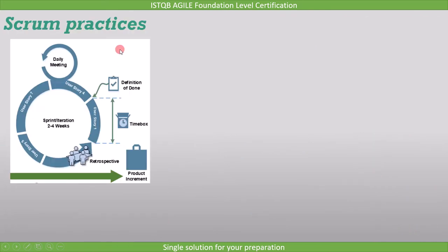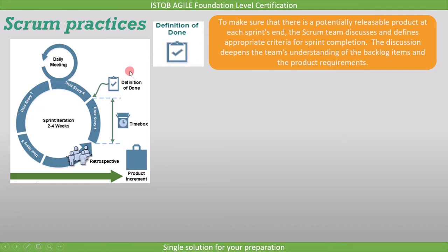Now let's move on to the Scrum Practices. The three Scrum Practices are Definition of Done, Time Boxing, and Transparency. Definition of Done is used to make sure that there is a potentially releasable product at each sprint's end. The scrum team discusses and defines appropriate criteria for sprint completion. This discussion deepens the team's understanding of the backlog items and the product requirements.